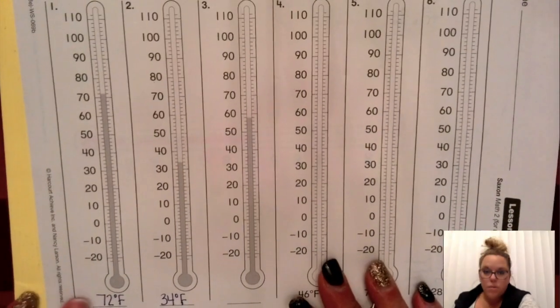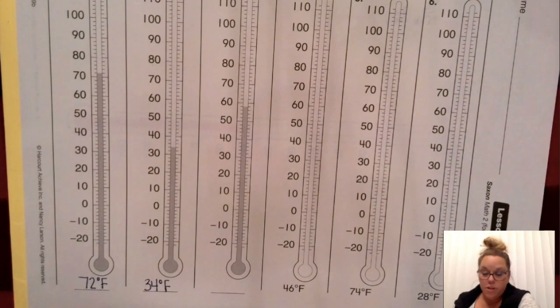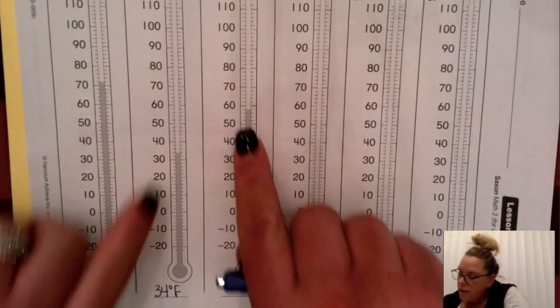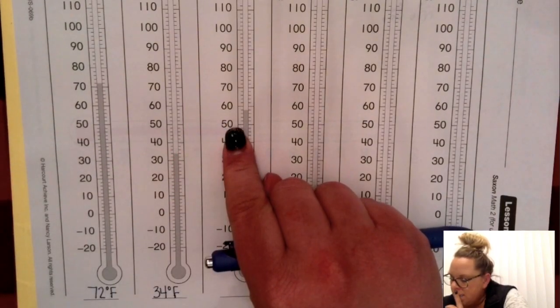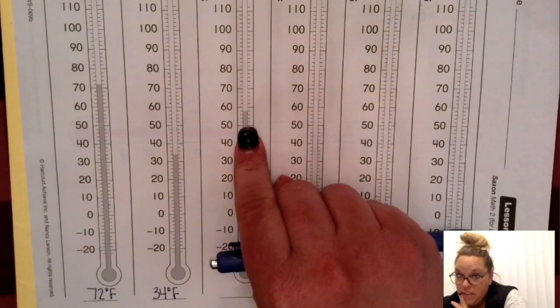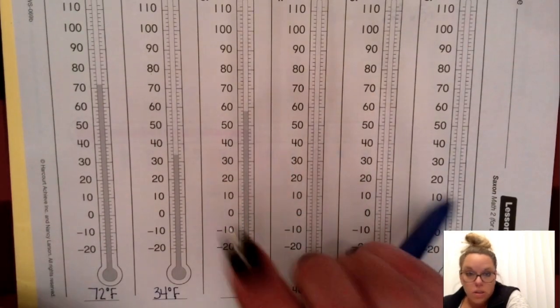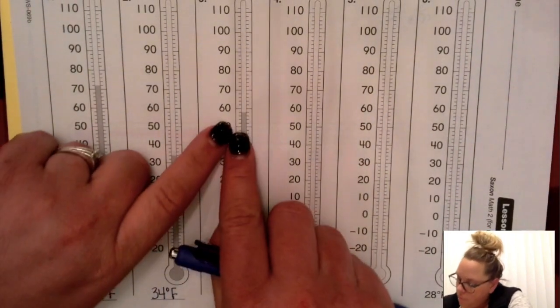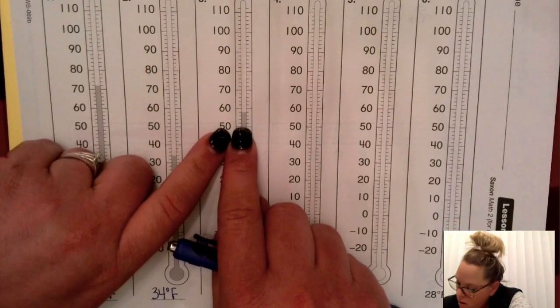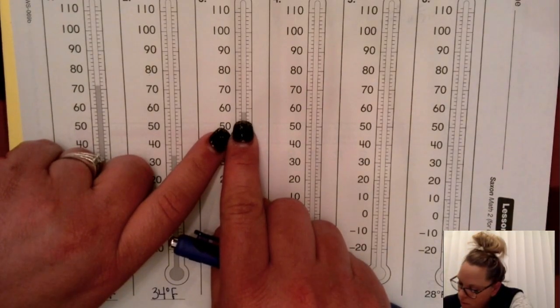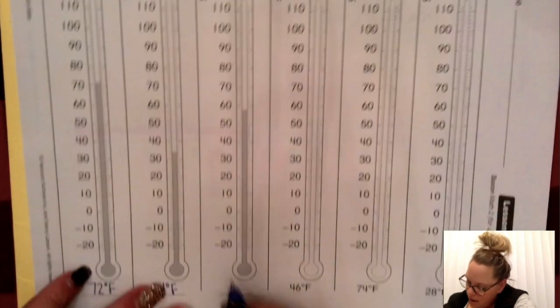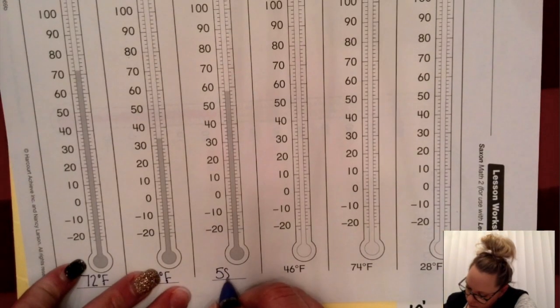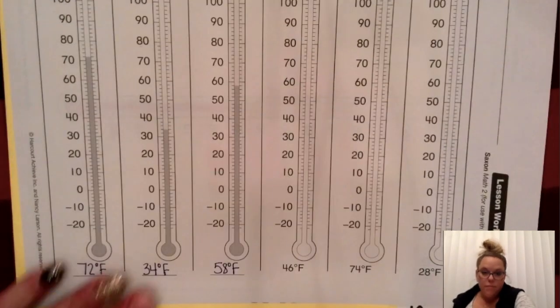Here's the last one that we have to figure out what temperature is. So it looks like it's in between 50 and 60. So I'm going to start at 50 and I'm going to count by twos until I get to the line: 50, 52, 54, 56, 58. 58 degrees Fahrenheit.